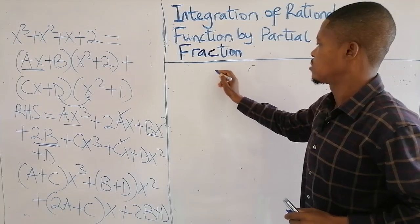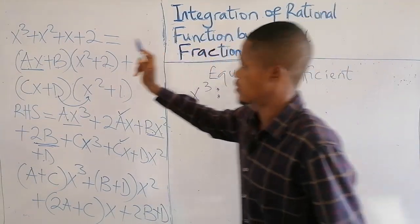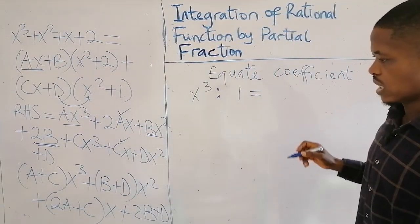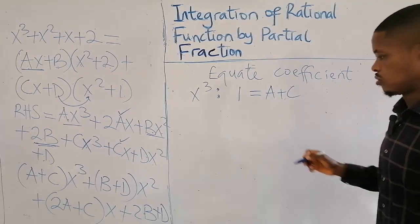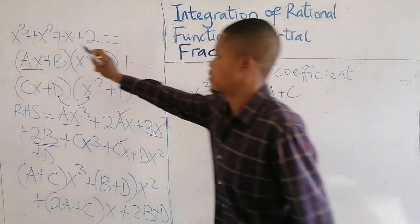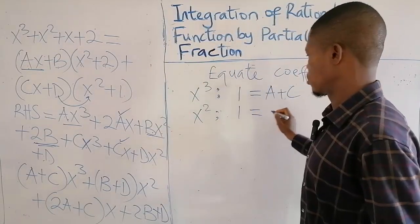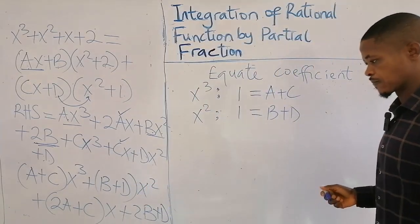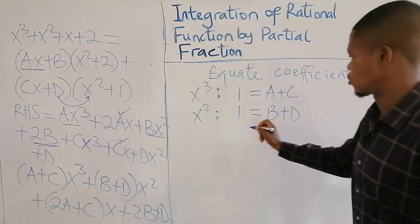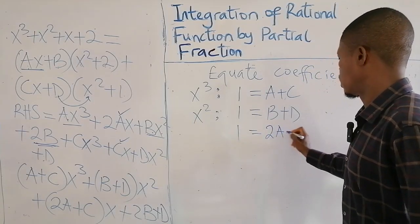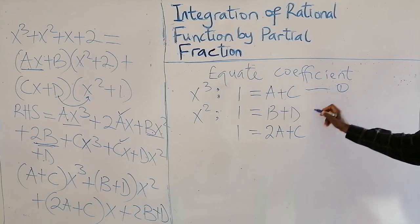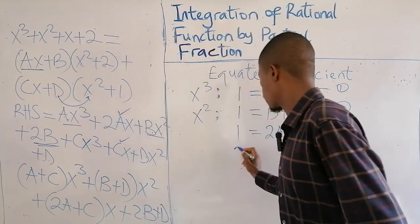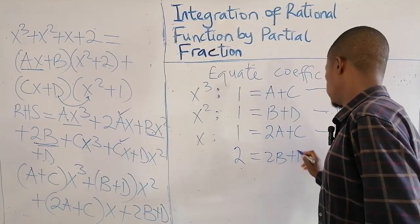Now let's equate coefficients. The coefficient of x cubed on the left is 1, so equation 1: a + c = 1. The coefficient of x squared on the left is 1, so equation 2: b + d = 1. The coefficient of x is also 1, so equation 3: 2a + c = 1. For the constant terms on the left we have 2, so equation 4: 2b + d = 2.